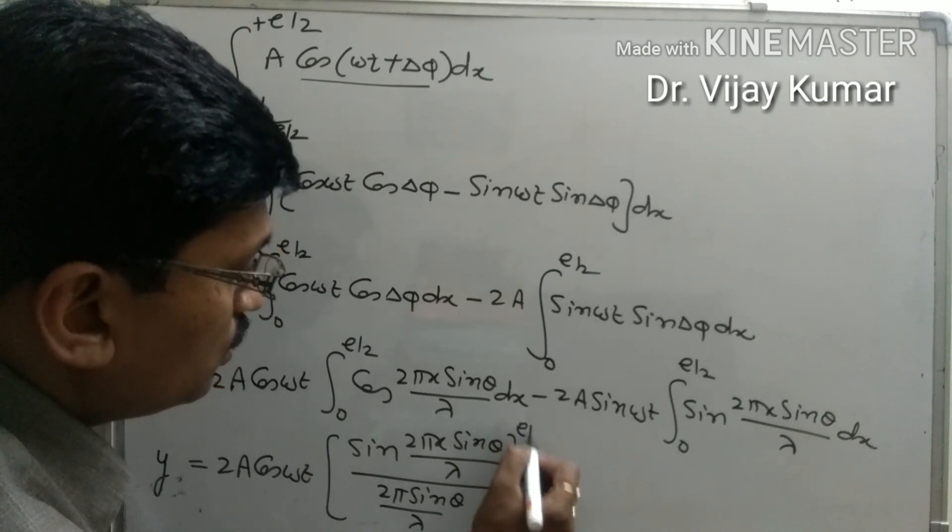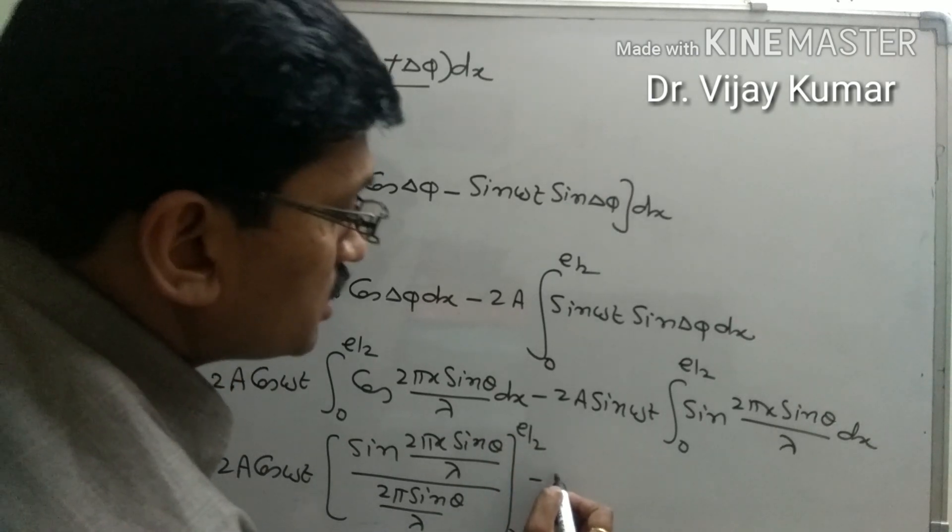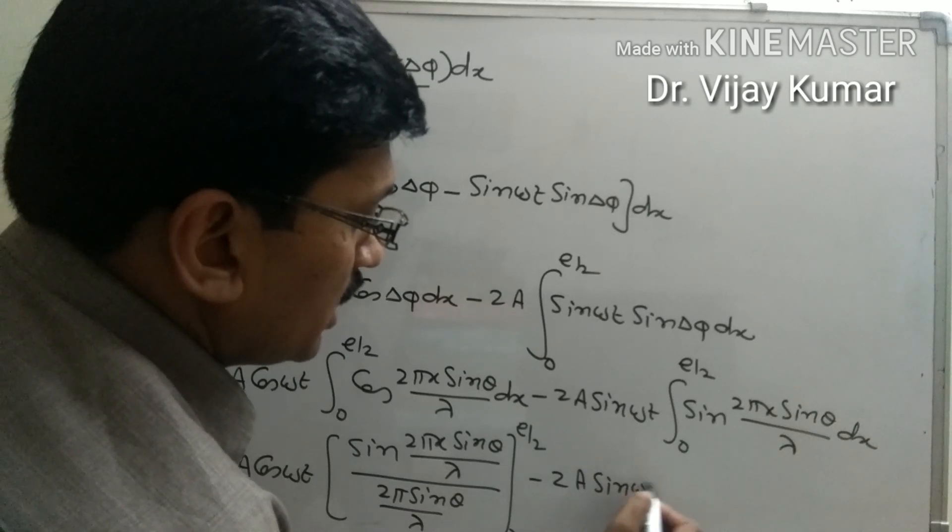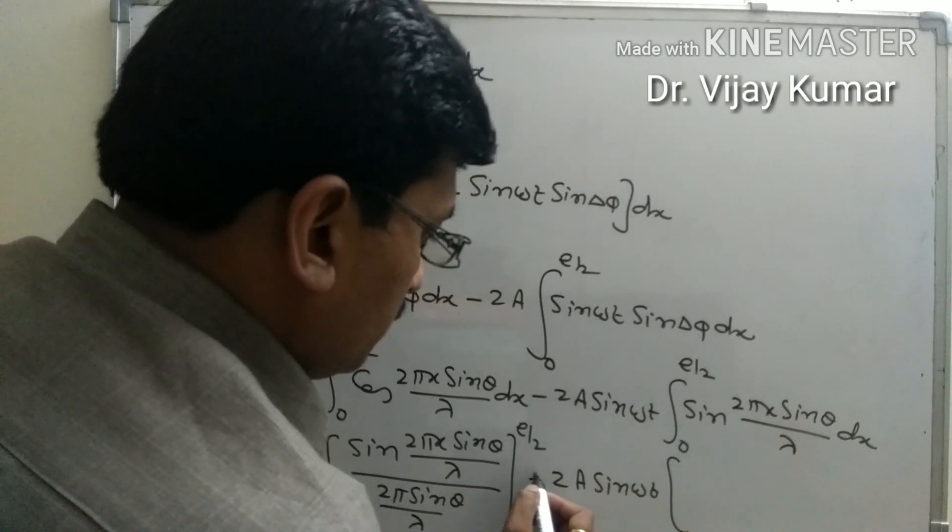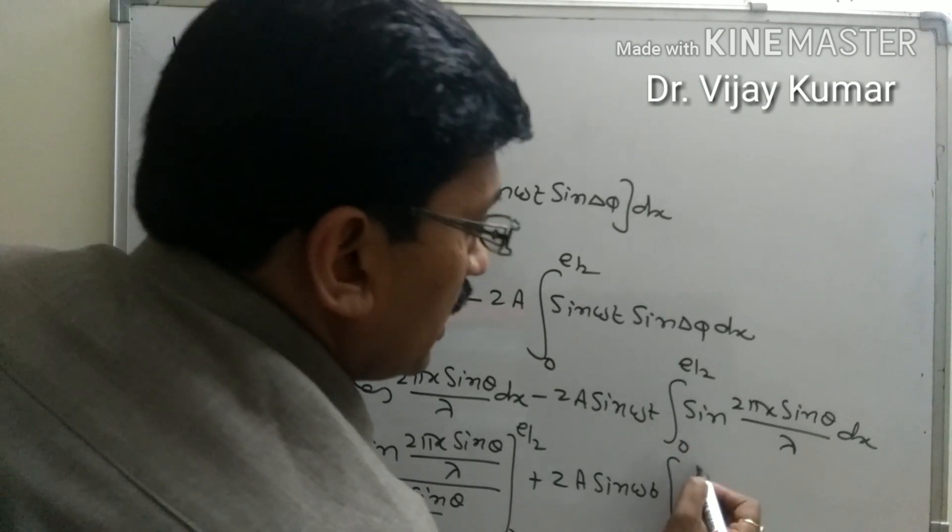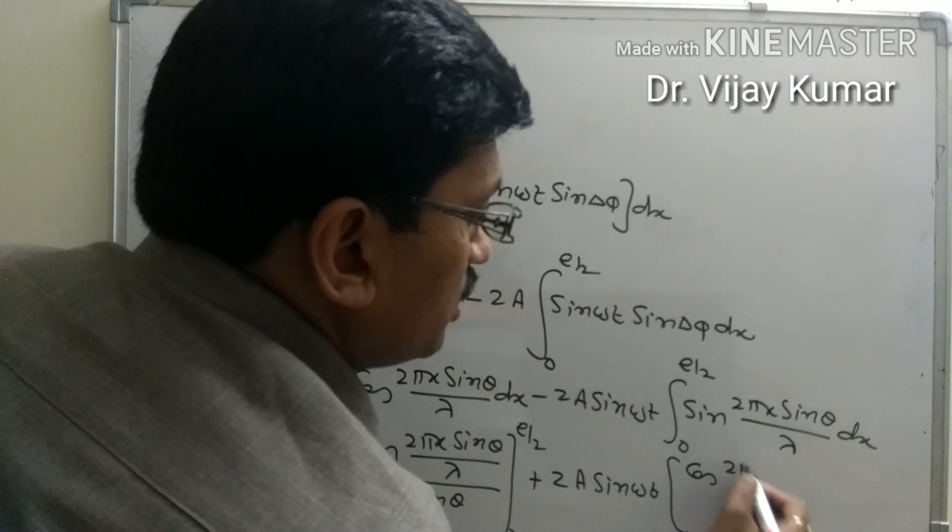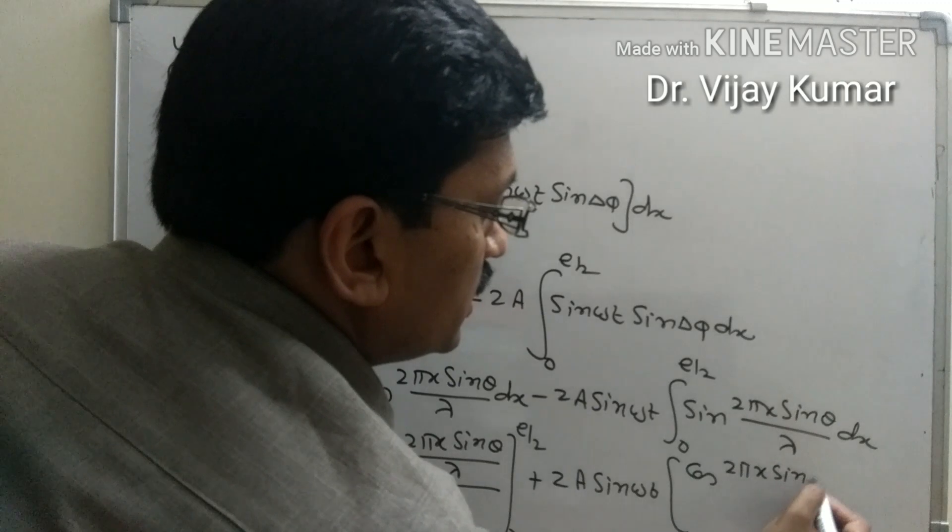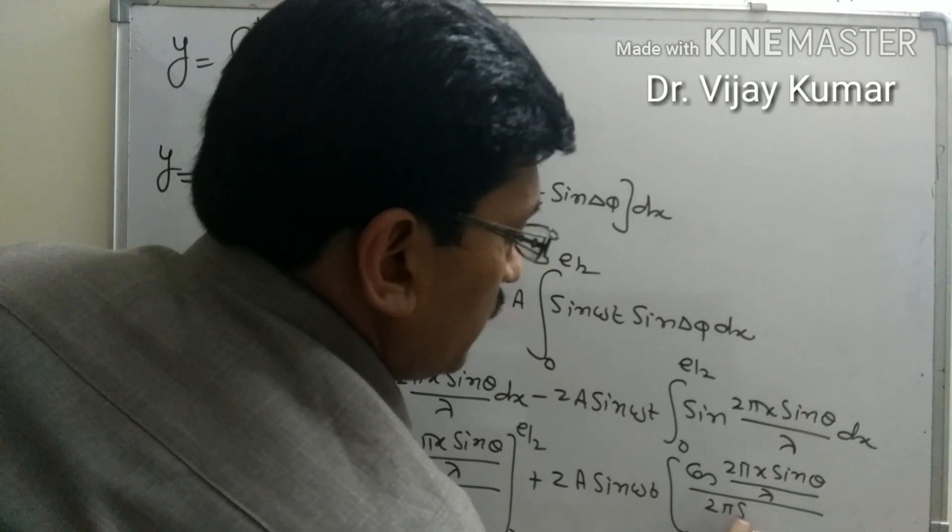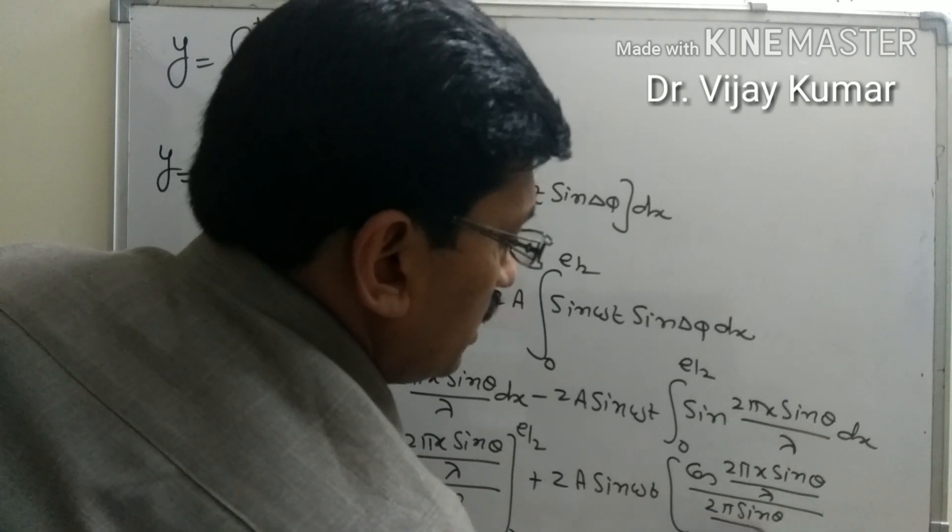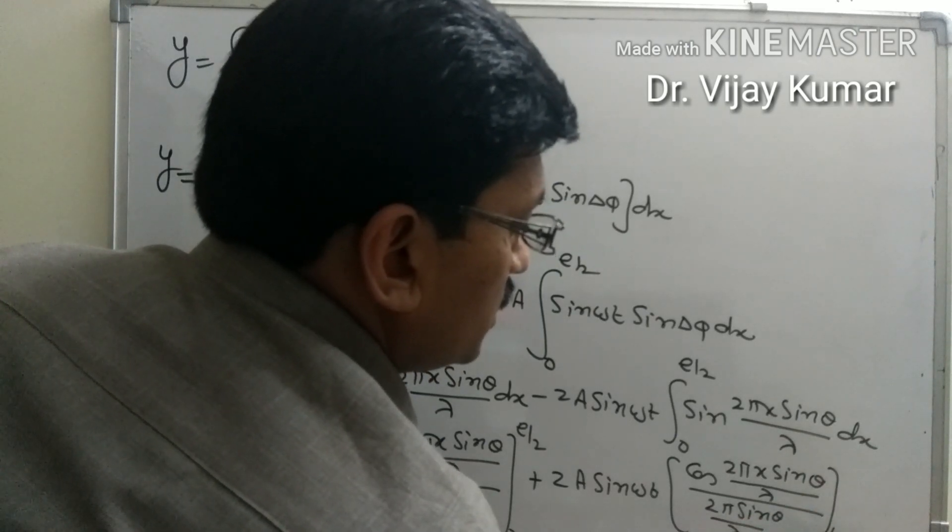the limits are 0 to e by 2. For the second term, we have minus twice a sin(omega t) times the result of integrating sin, which gives minus cos(2 pi x sin theta over lambda), with limits from 0 to e by 2.